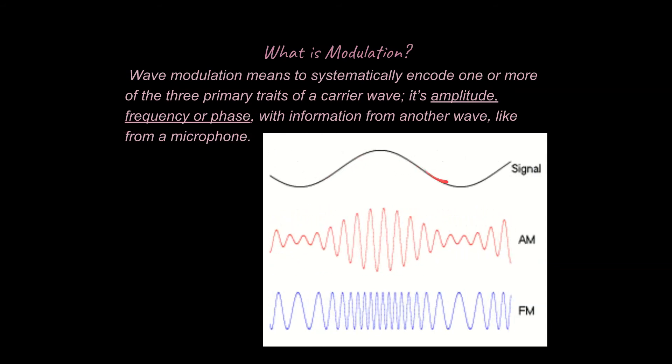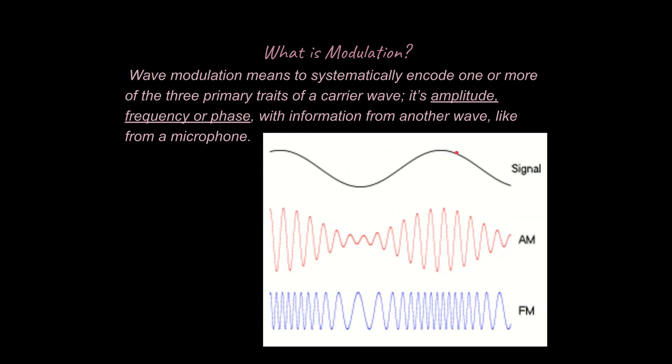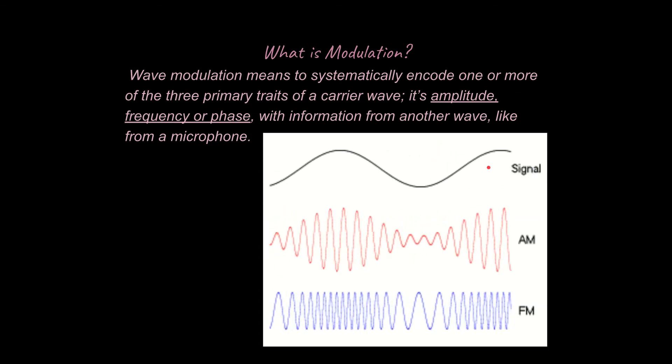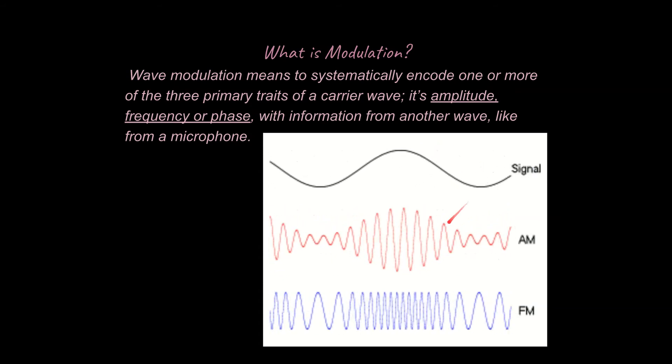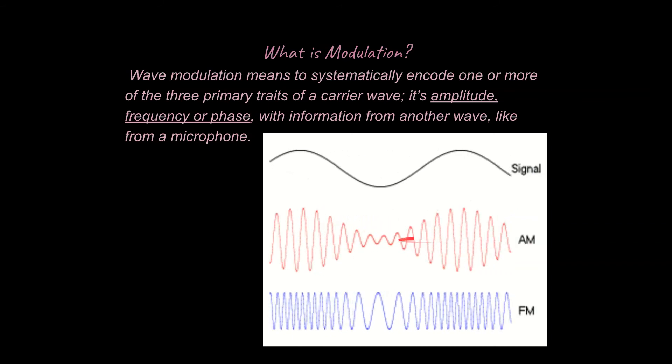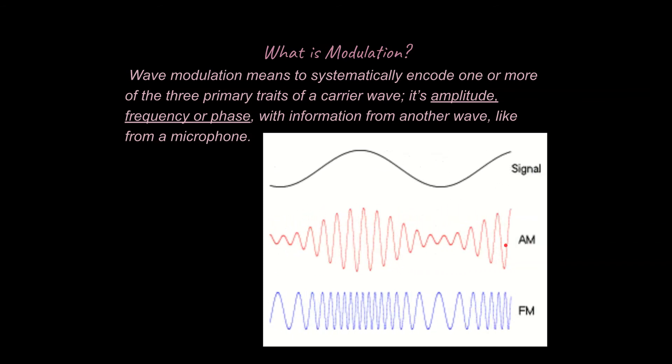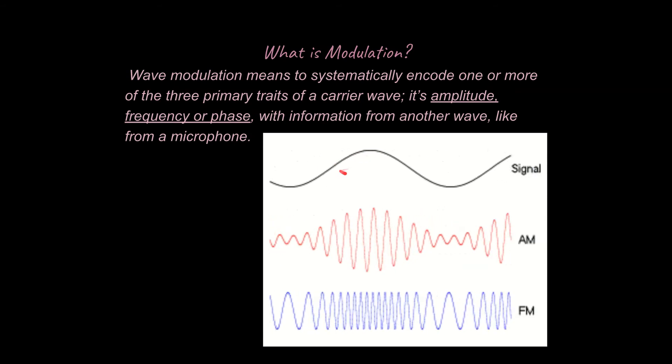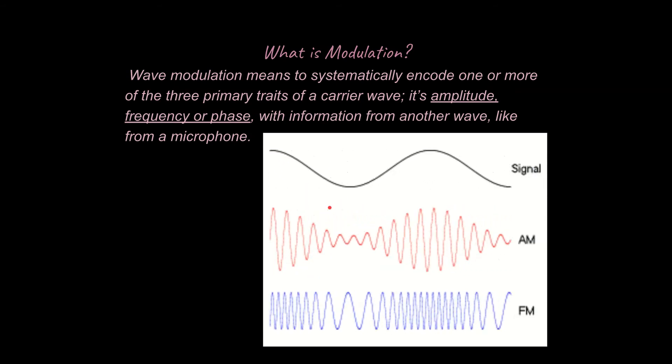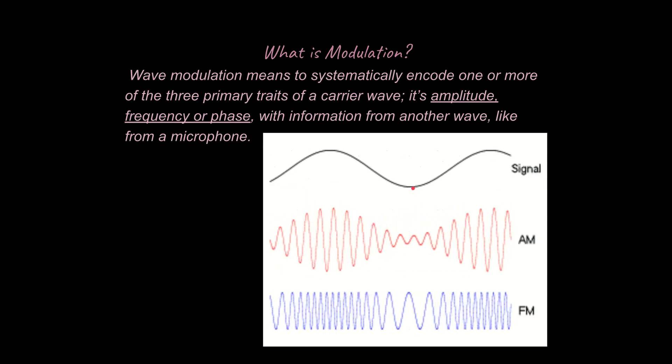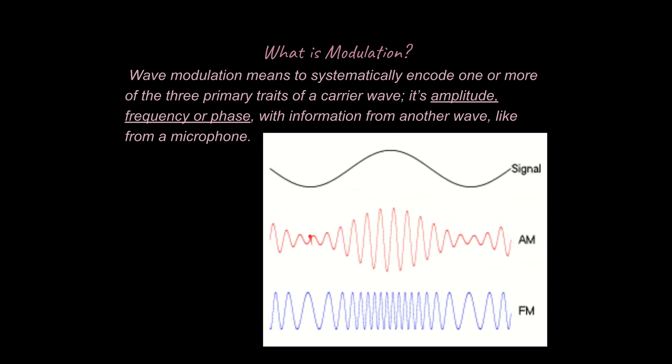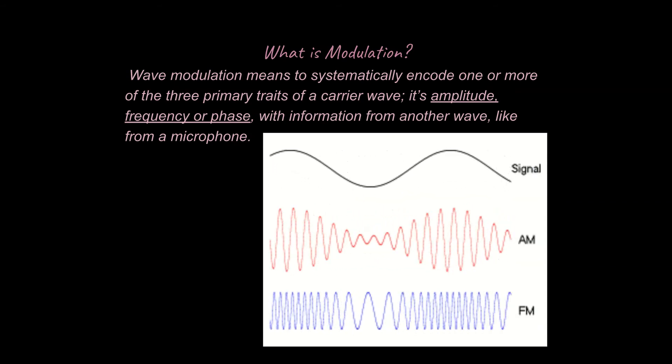So if you take a look right here, let's say this is our signal, like this is the information we need to encode. We could encode that signal in an AM carrier wave and end up with a wave that looks like this. Notice that these crests right here are going to correspond to a greater amplitude in the AM wave, and the troughs right here are going to correspond to a lower amplitude in the AM wave.